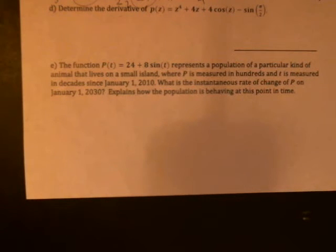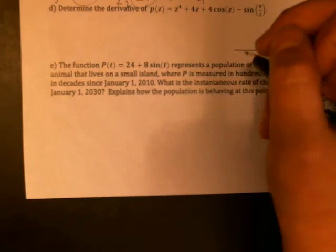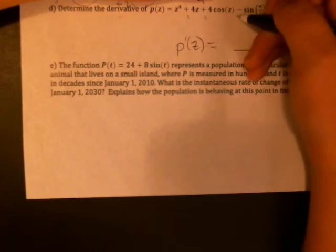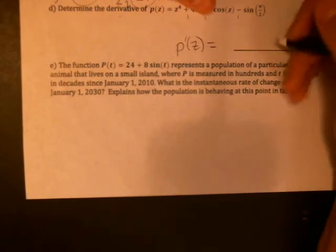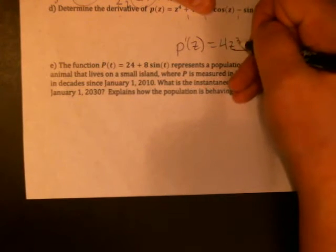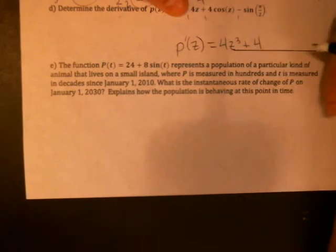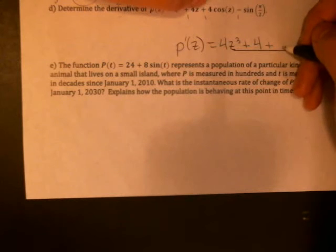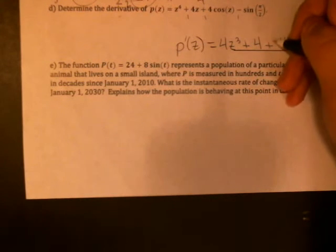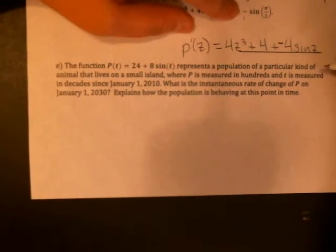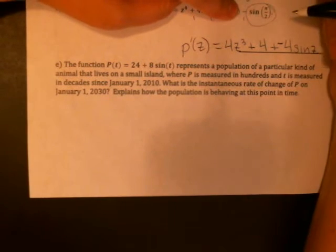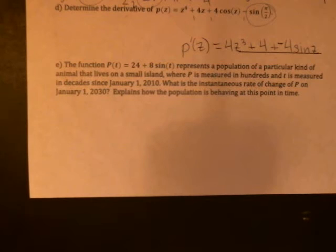Okay, D is asking us to find the derivative of p(z) equals z to the 4th plus 4z plus 4 cosine z minus sine pi over 2. Okay, I don't think I'll need to do much simplifying, so we'll just start at p prime of z. So this is a big sum and difference, so we're going to start with z to the 4th. And the derivative of z to the 4th is 4z cubed. The derivative of 4z is just the 4. The derivative of 4 cosine z, the 4 is just going to carry through. The derivative of cosine is minus sine. And then last one, we have minus the derivative of sine of pi over 2. Watch that one. That's a tricky constant. So its derivative is zero. There's no variable in there.